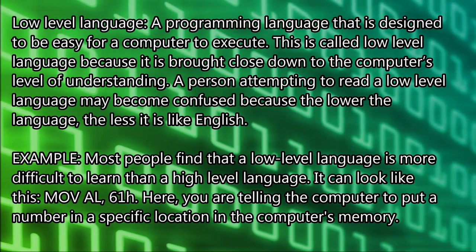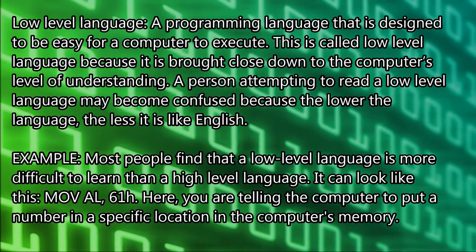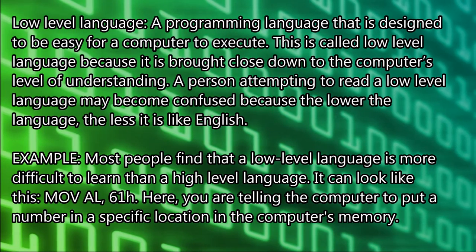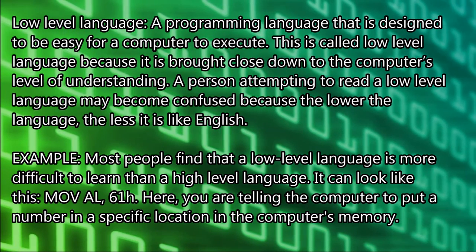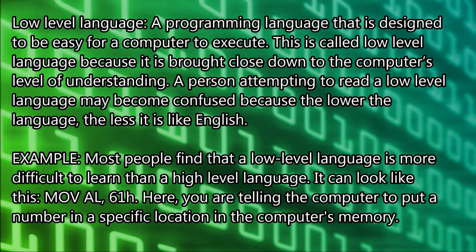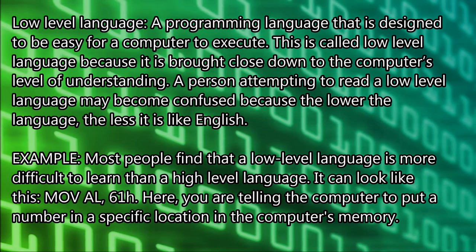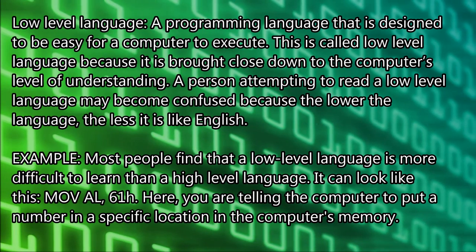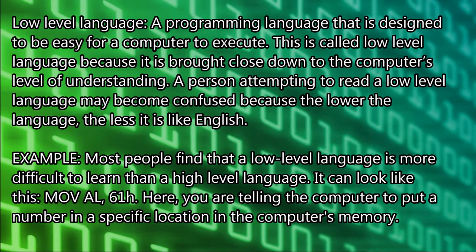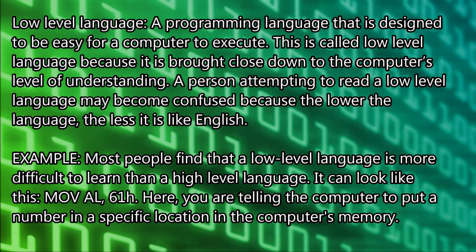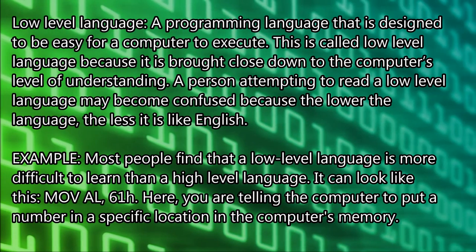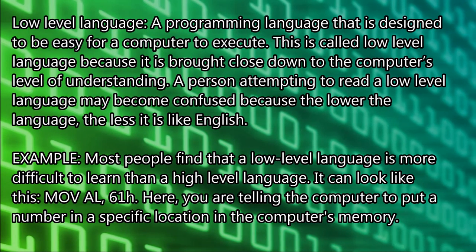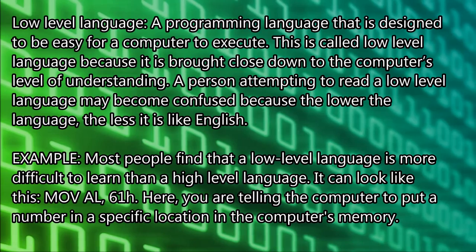Low-level language — a programming language that is designed to be easy for a computer to execute. It is called low-level language because it is brought close down to the computer's level of understanding. A person attempting to read a low-level language may become confused, because the lower the language, the less it is like English. For example, it can look like this: MOV AL, 61H — here you are telling the computer to put a number in a specific location in the computer's memory.